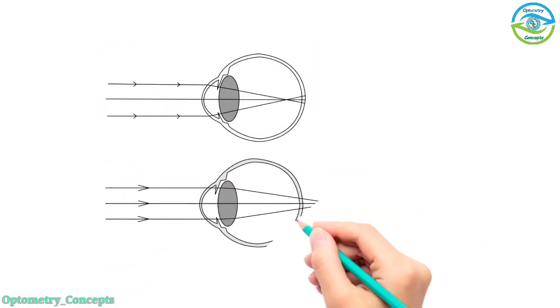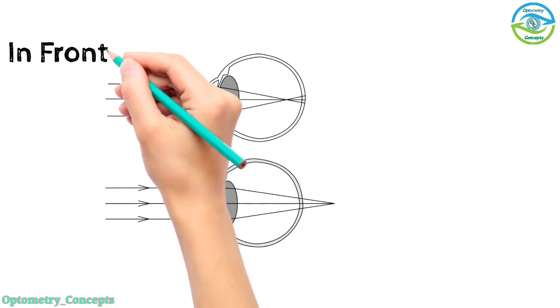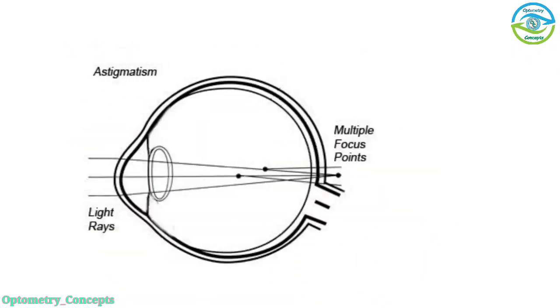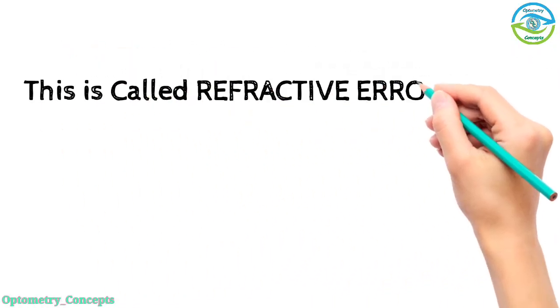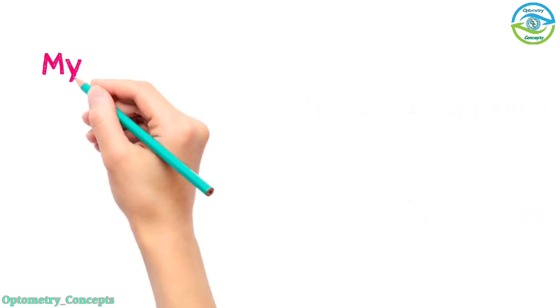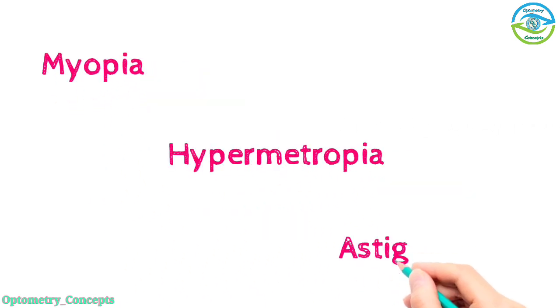On the contrary, instead of focusing on the retina, parallel rays either focus in front or behind the retina, or maybe form two different focal points. This is called refractive error, also known as ametropia. It is of three types: myopia, hypermetropia, and astigmatism.